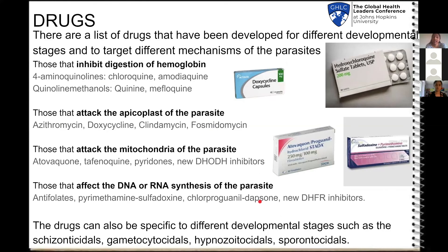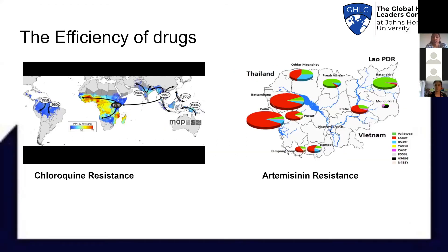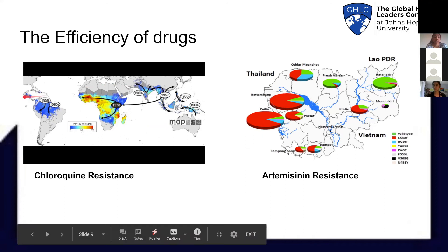We have a list of drugs against malaria. A few target the processes of the parasite, such as digestion of hemoglobin or DNA and RNA synthesis, or they target specific organelles such as the apicoplast or mitochondria. However, when we talk about efficacies, the list almost disappears because of resistance. Resistance has been observed in two of the most commonly used drugs: chloroquine and artemisinin. Chloroquine is a cost-effective drug used as a prophylaxis, and resistance has been observed twice — once in Southeast Asia and once in South America. Artemisinin is given as combination therapy, and resistance has been observed in Asian regions.